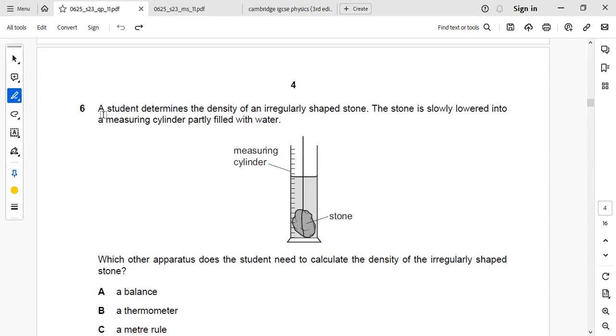The next question is a student determines the density of an irregularly shaped stone. The stone is slowly lowered into a measuring cylinder partly filled with water. Which apparatus does the student need to calculate the density of the irregularly shaped stone?